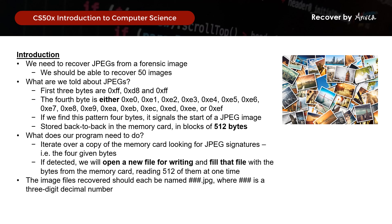The image file recovered should also be named in ascending order, in the format of a 3-digit number. So the first image generated should be named 000.jpeg, the next image 001.jpeg, and so on.